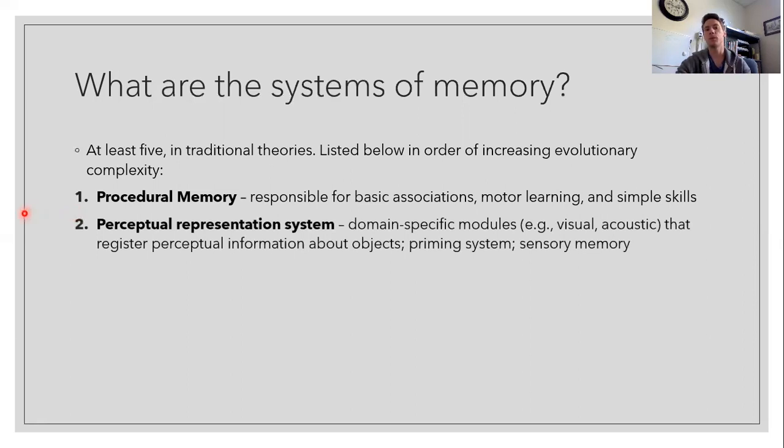Next we can talk about perceptual representation system. Now this type of memory system receives much less research, and we won't discuss it as much as the other types that I'm going to talk about on this slide. But essentially what this is, is your brain processing sensory information as you're registering objects.